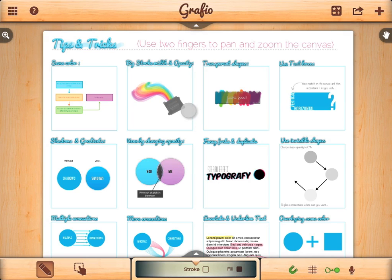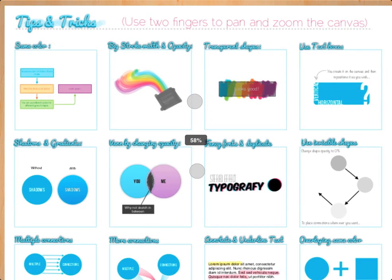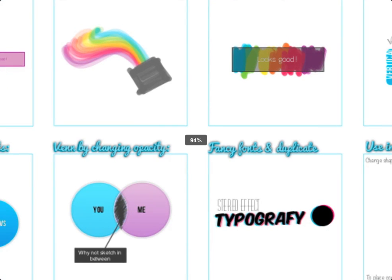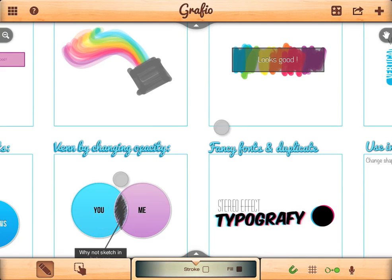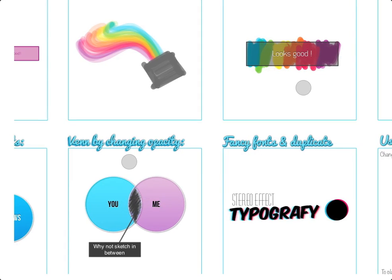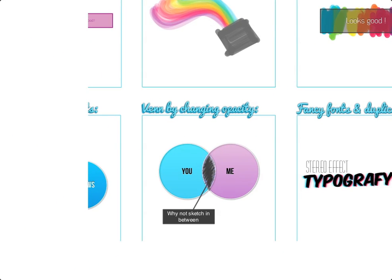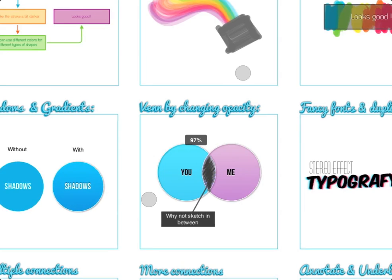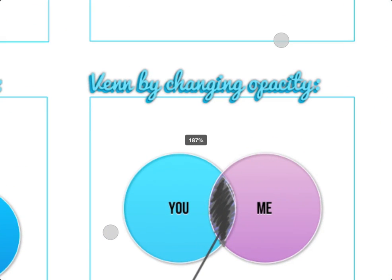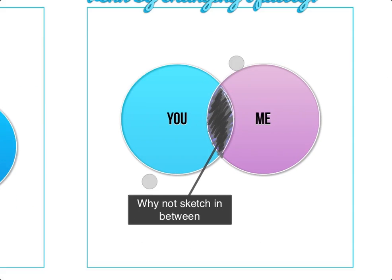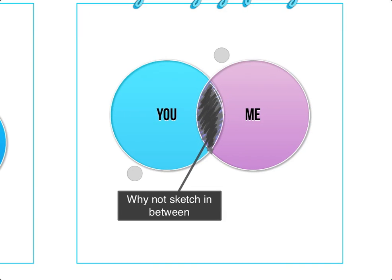Use two fingers and pinch out to zoom in. Swipe with two fingers to pan the canvas. Zooming could be very useful when you want to add extra detail to your drawing.